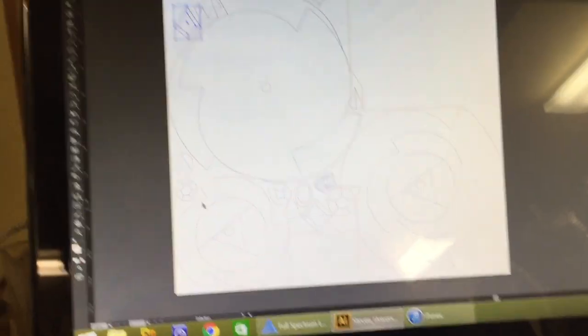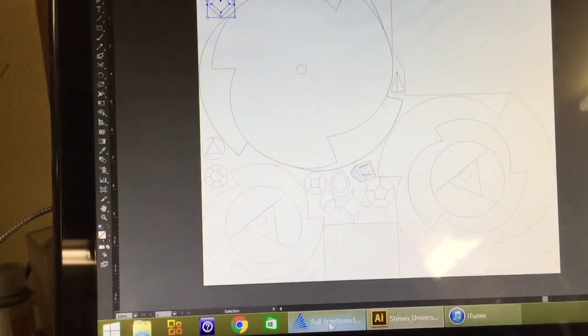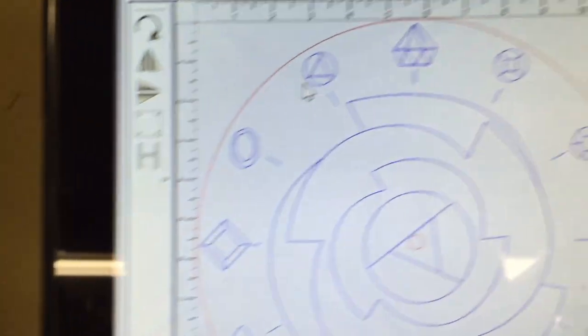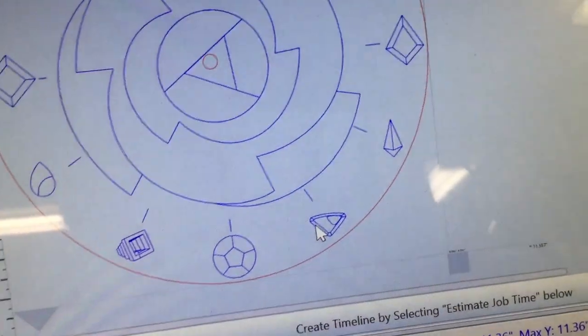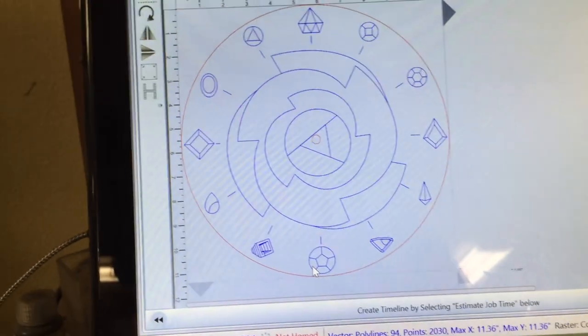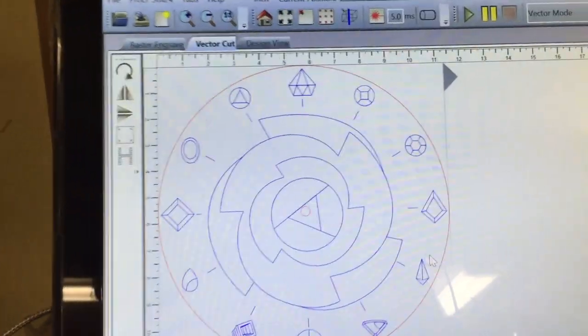All of those will get cut out and they will be glued in place where these are, which again is just an etch to let me know where to put things.